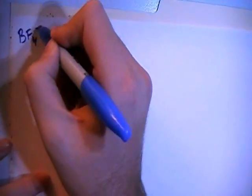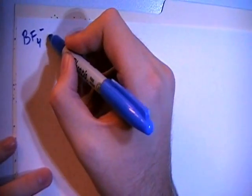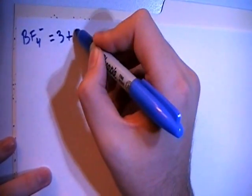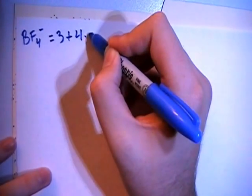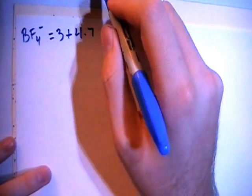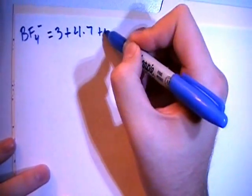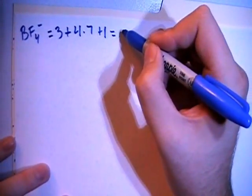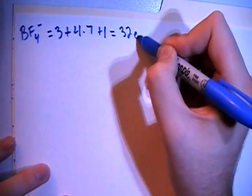So here we go, tetrafluoroborate ion is going to be BF4- and this is going to give us three valence electrons from the boron plus four fluorines each with seven valence electrons of their own plus one more valence electron for the minus one charge for an overall total of 32 valence electrons.